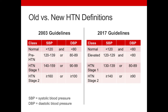While previous guidelines classified 140 over 90 as Stage 1 hypertension, this level is now classified as Stage 2 hypertension under the new guidelines. Stage 2 hypertension is now defined as equal to or above 140 systolic or equal to or above 90 diastolic. You can see and compare these changes on this slide.